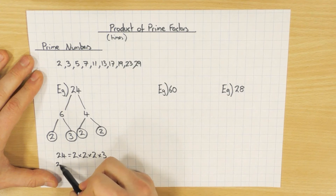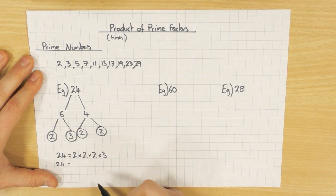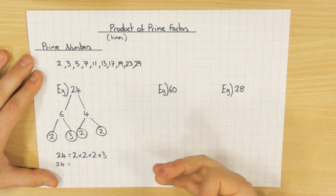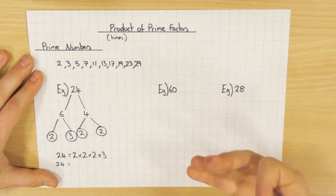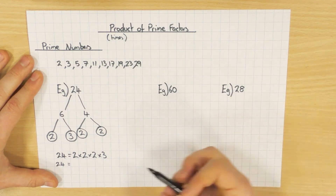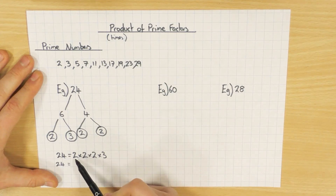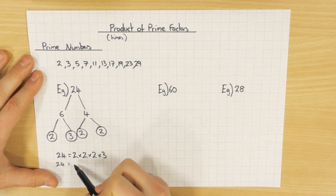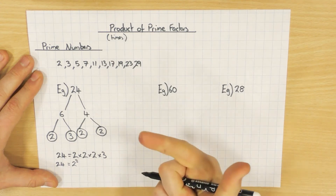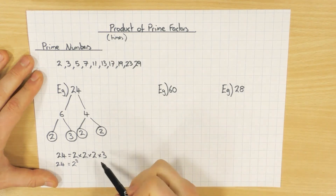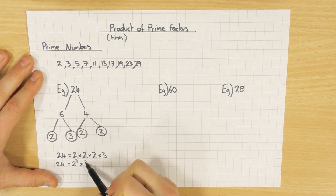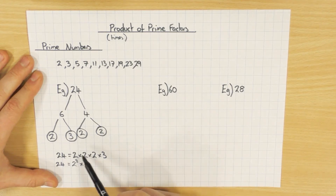Just another point: sometimes they ask you to write it in what's called index notation. It's just like your powers — like your squares, your cubes, the power of 4, the power of 5, and so on. In this particular case, 2 times 2 times 2 can be rewritten as 2 cubed, and then don't forget the 3 at the end. So that's just an example of index notation.